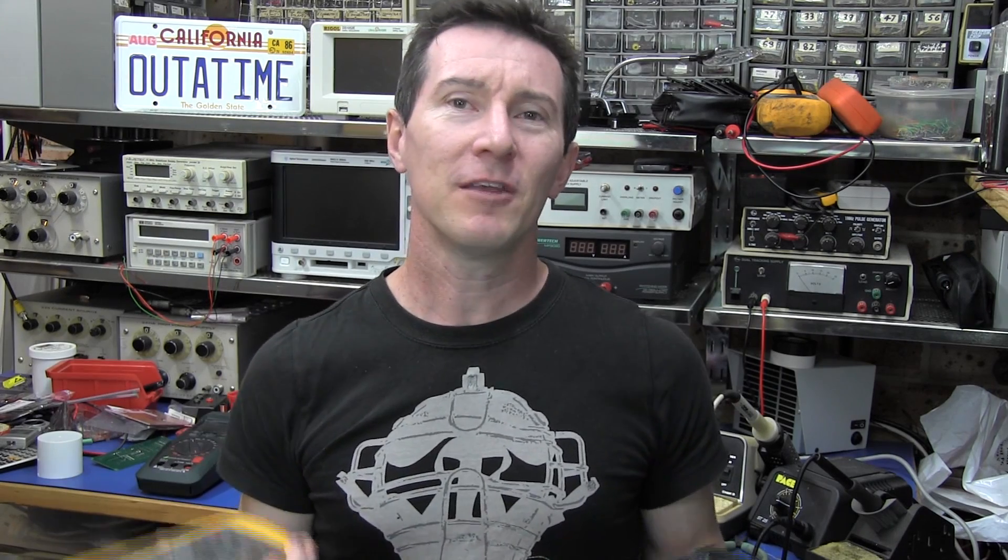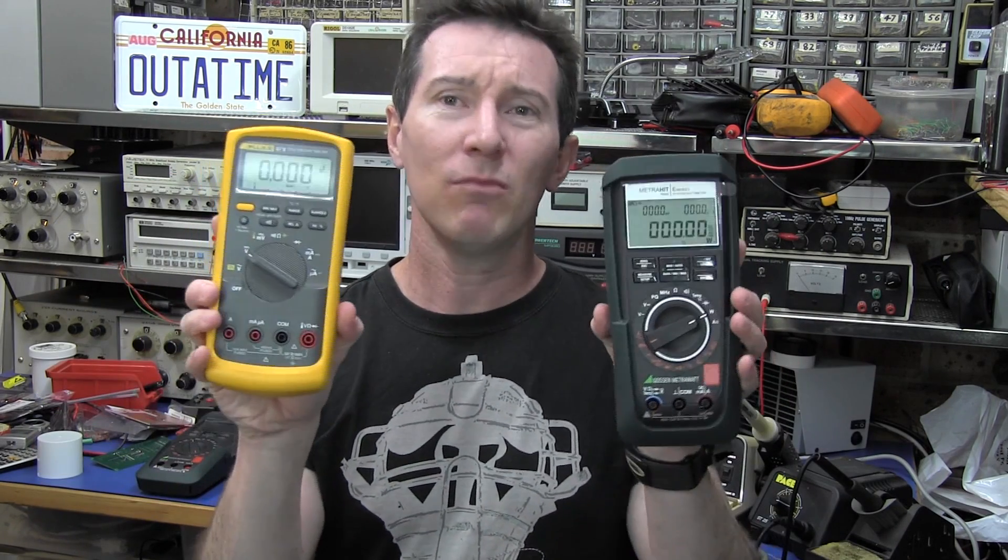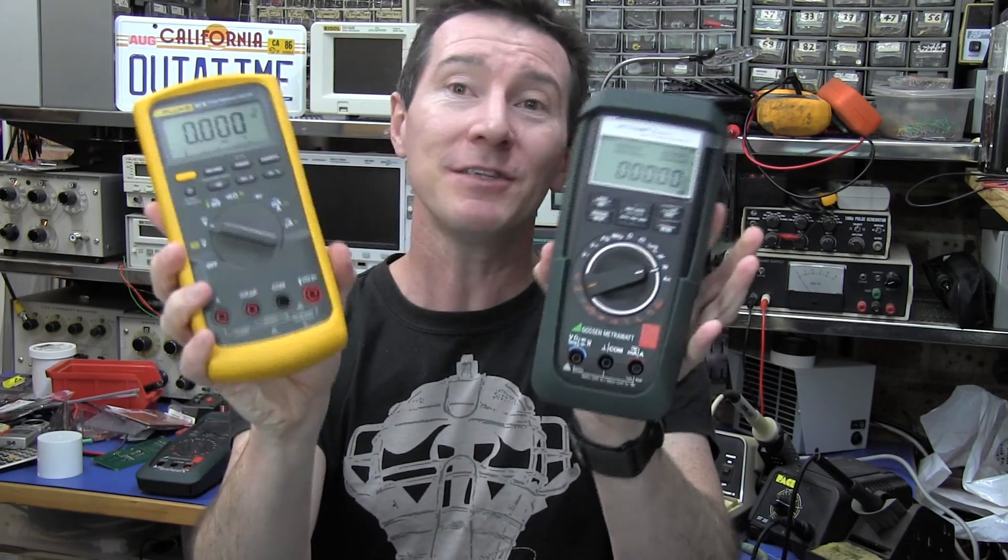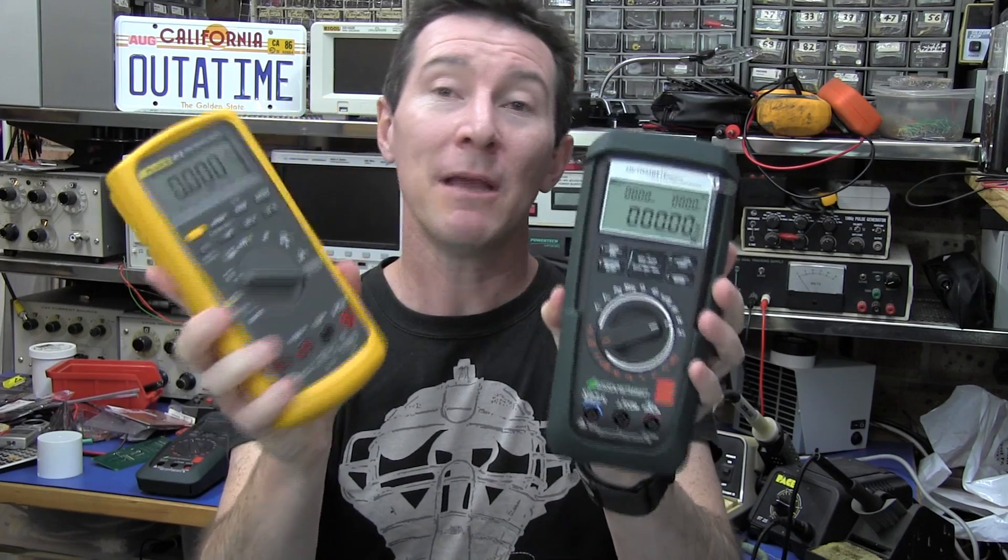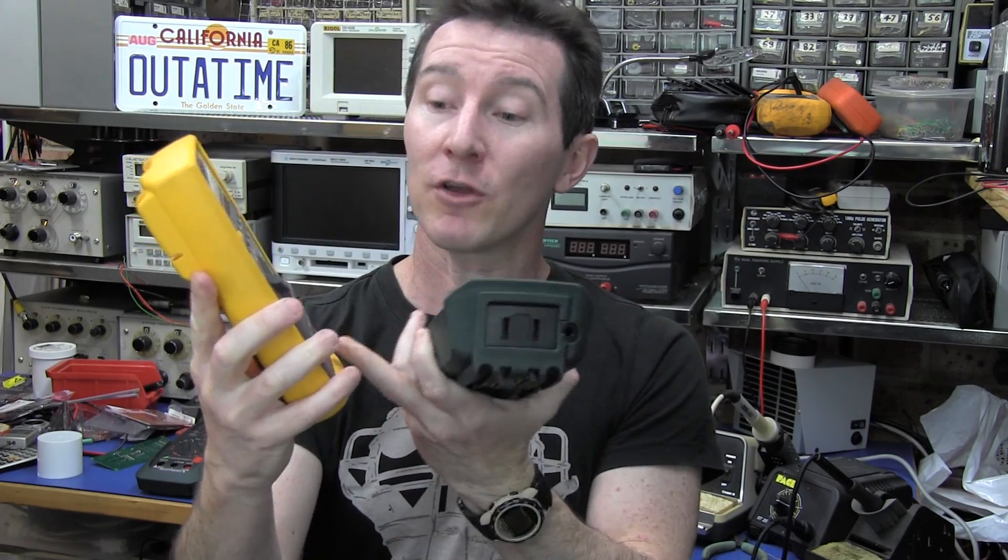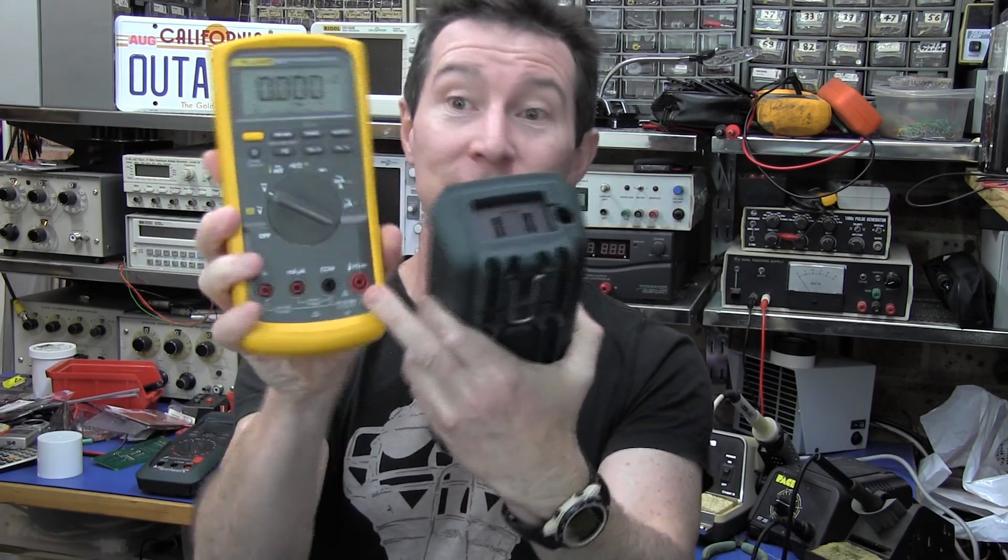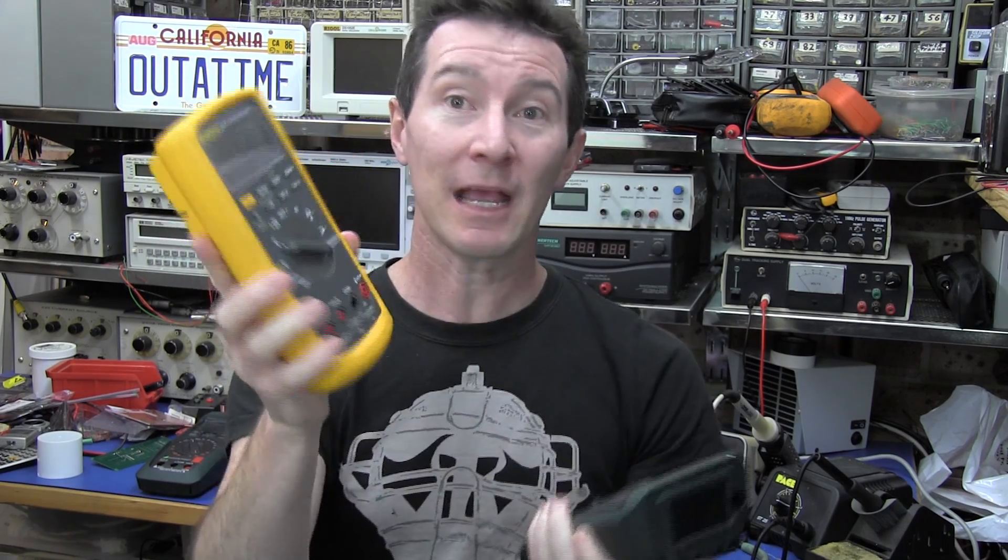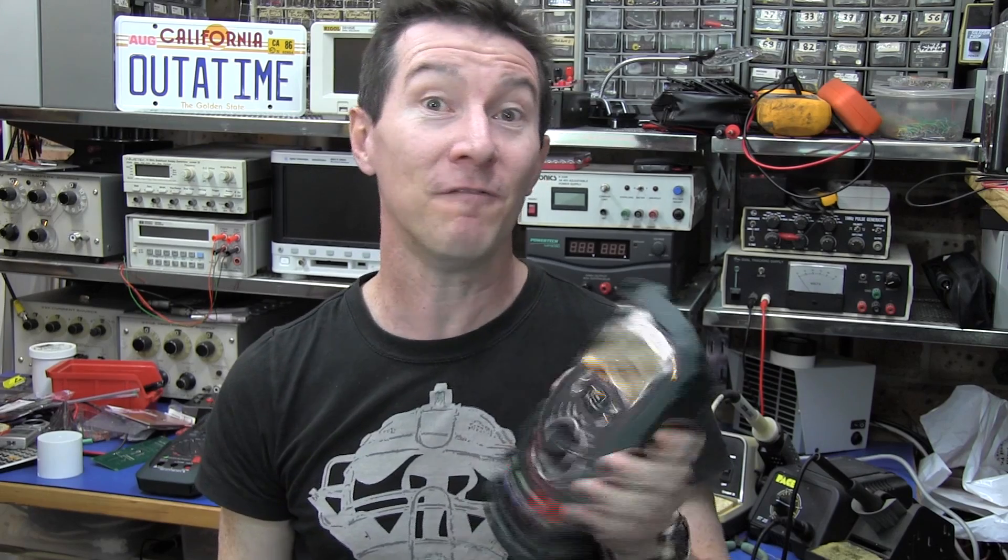So I started off thinking about multimeters. Quick thought, what do they all have in common? Well, it's pretty obvious. They all are basically a single measurement type device. They've got a common jack, a volts and ohms jack, and an amps jack. And really, there's very few on the market that actually do more than that.